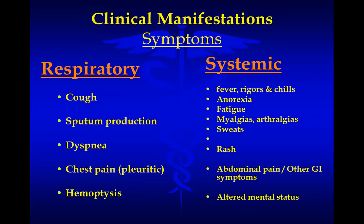Specific respiratory symptoms include cough, sputum production, dyspnea, pleuritic chest pain, and hemoptysis. Systemic symptoms include fever (top of the list), rigors, chills, anorexia, fatigue, myalgias, excessive sweating, and arthralgias. Certain pneumonias present with rash, while others may present with extra-pulmonary symptoms like abdominal pain, diarrhea, or other GI symptoms.